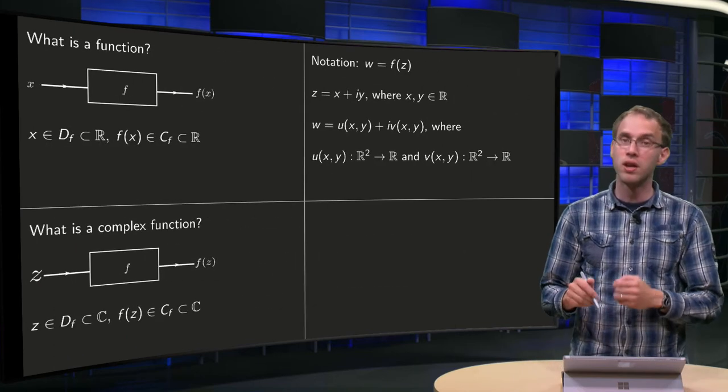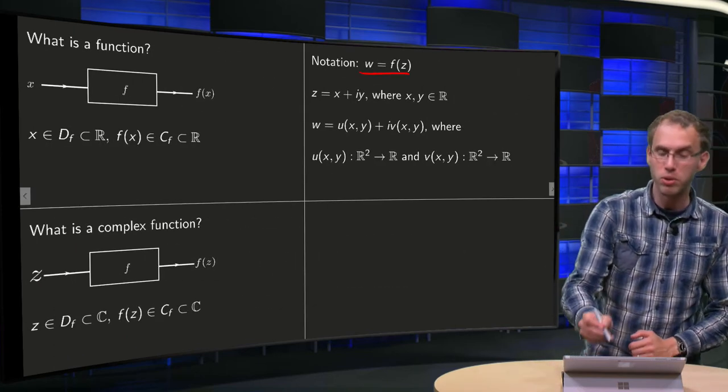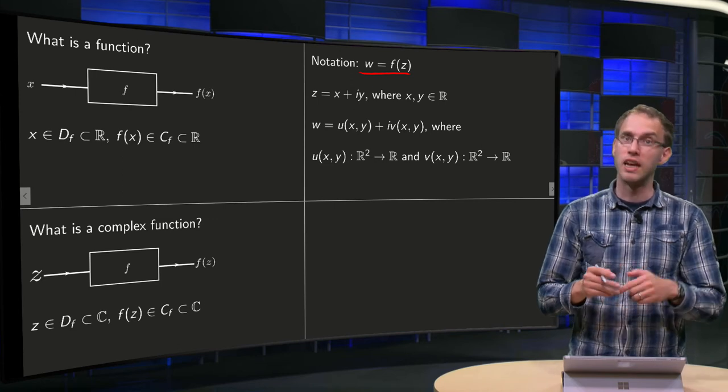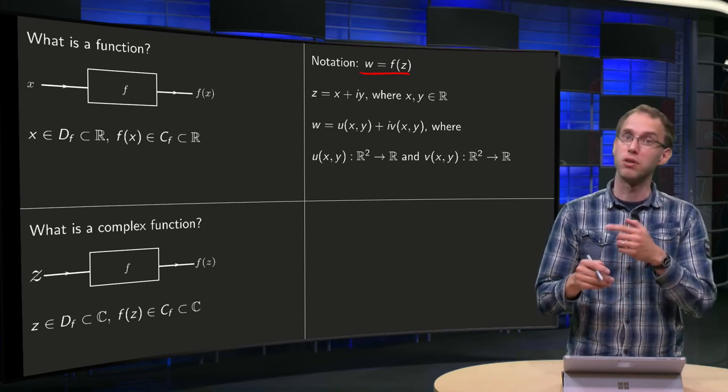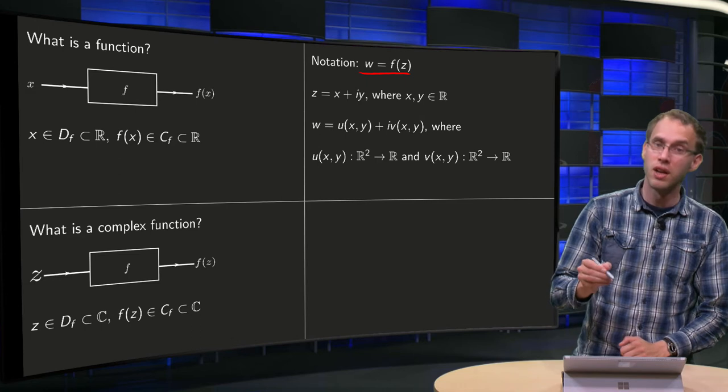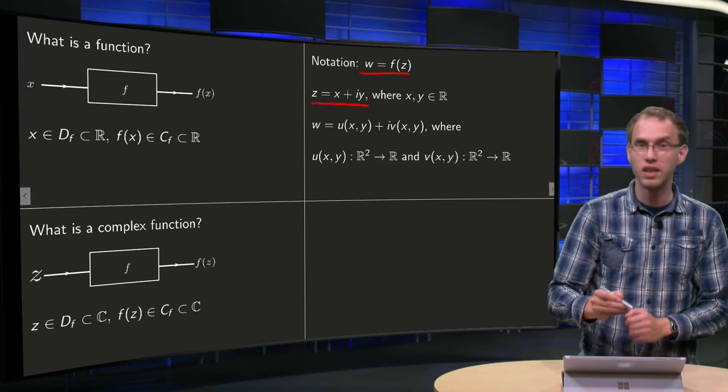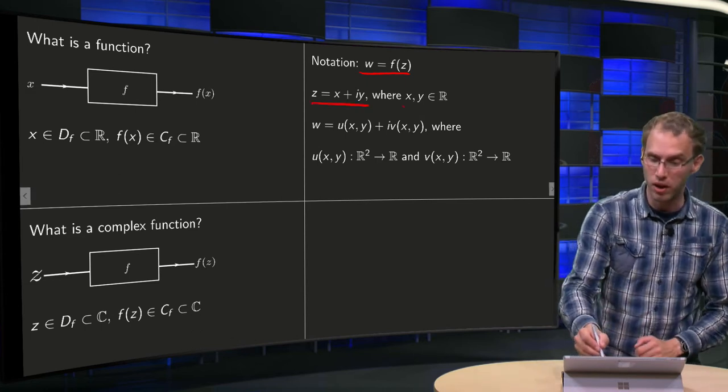Let's use some notation now. We often write w equals f(z) instead of y equals f(x), because we will need y for something else. We write z equals x plus iy, where x and y are real numbers.